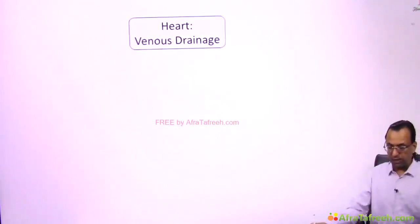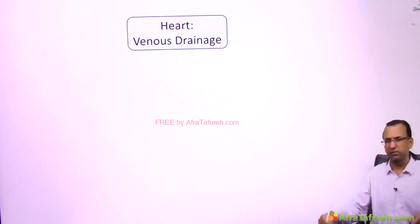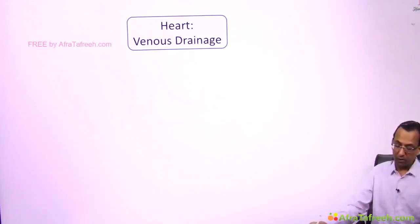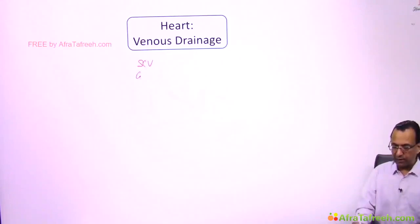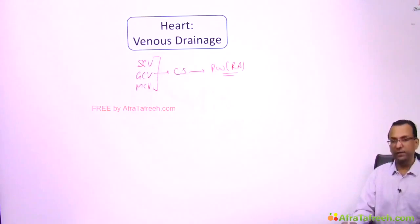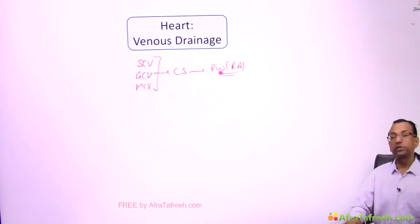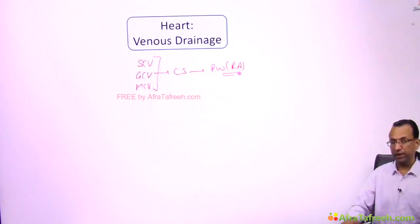Looking at the venous drainage of the heart in more detail, there is a small cardiac vein, a great cardiac vein, and a middle cardiac vein, all draining into the coronary sinus. The coronary sinus drains into the posterior wall of the right atrium.